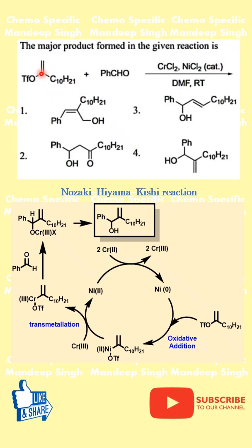What essentially happens in this particular reaction is the formation of allylic alcohol. So the correct answer is option four. Let's quickly look into how this happens.